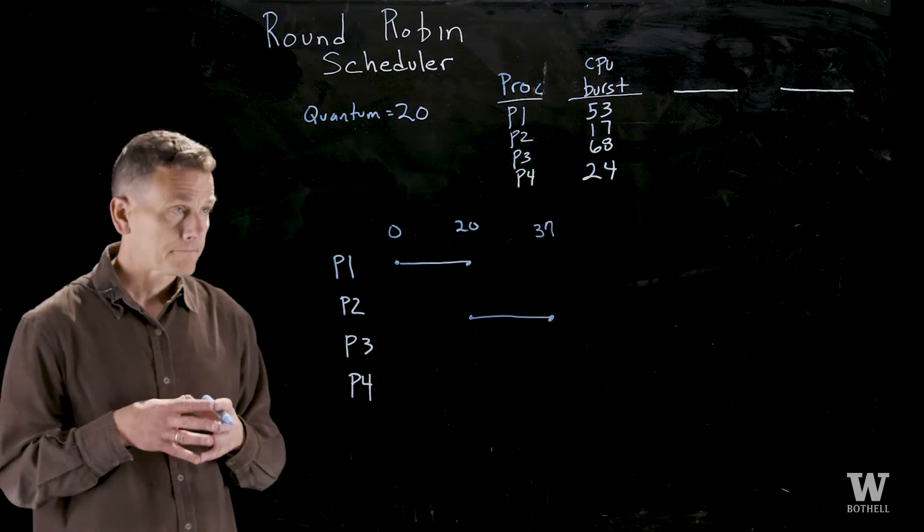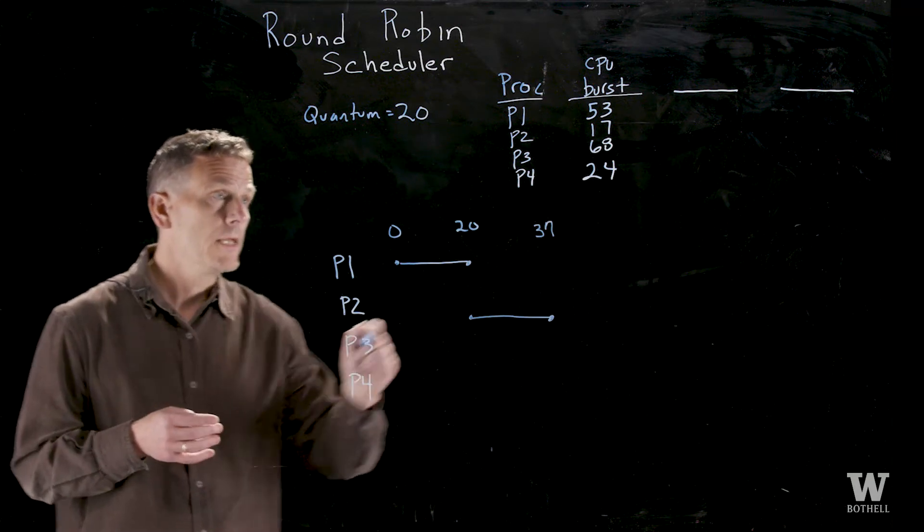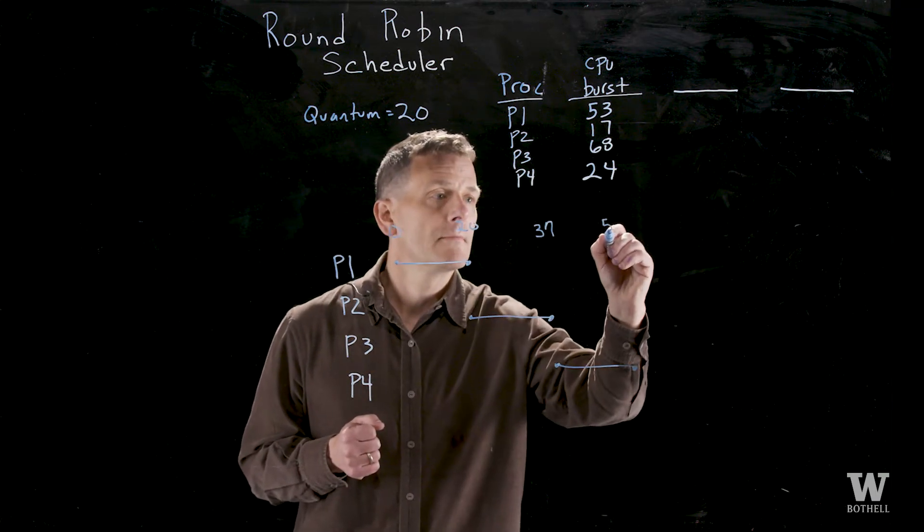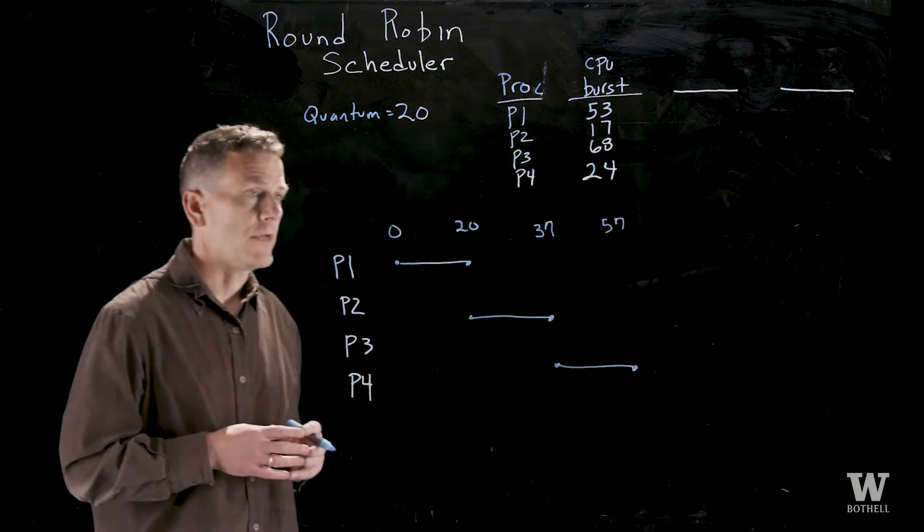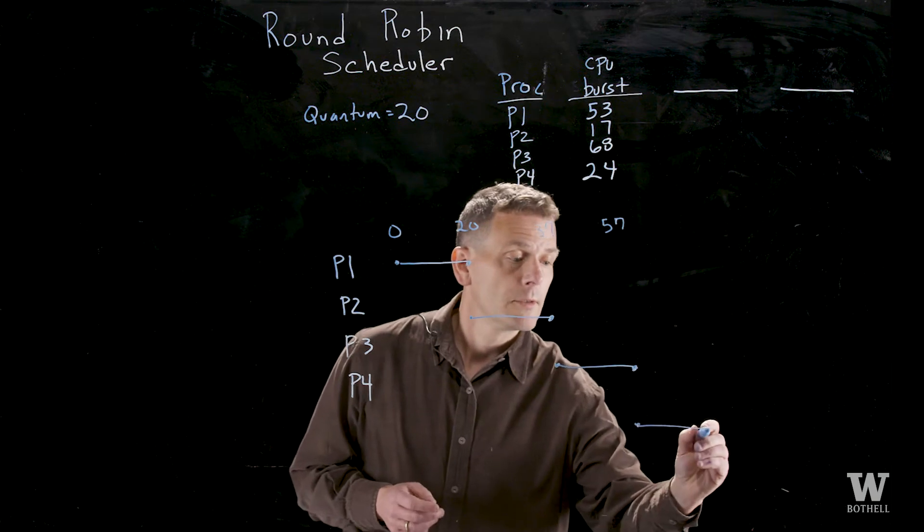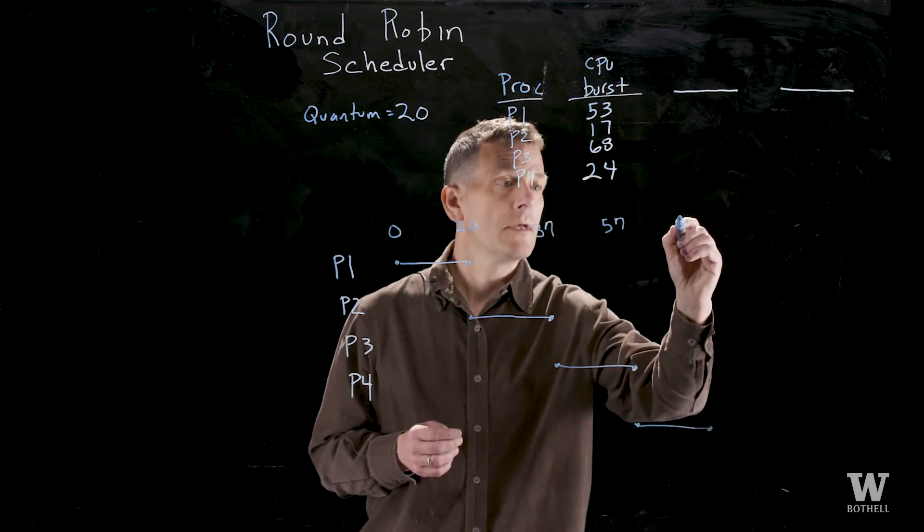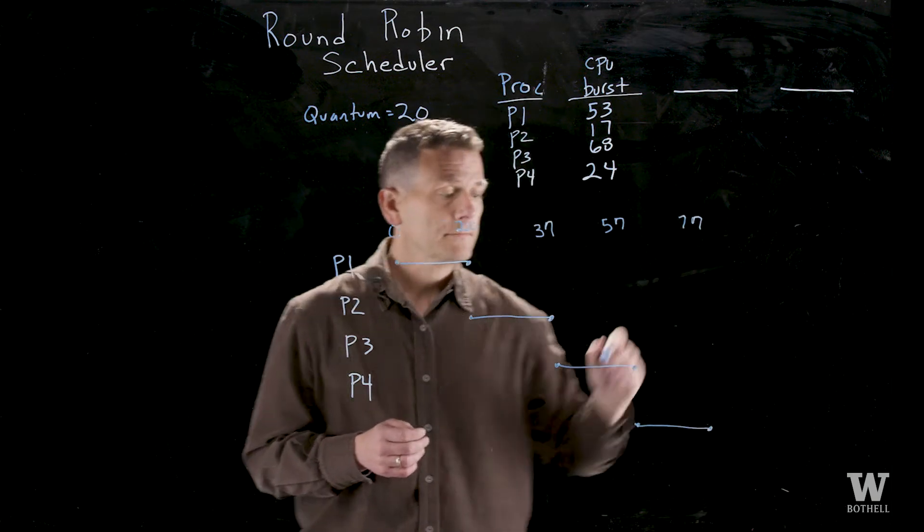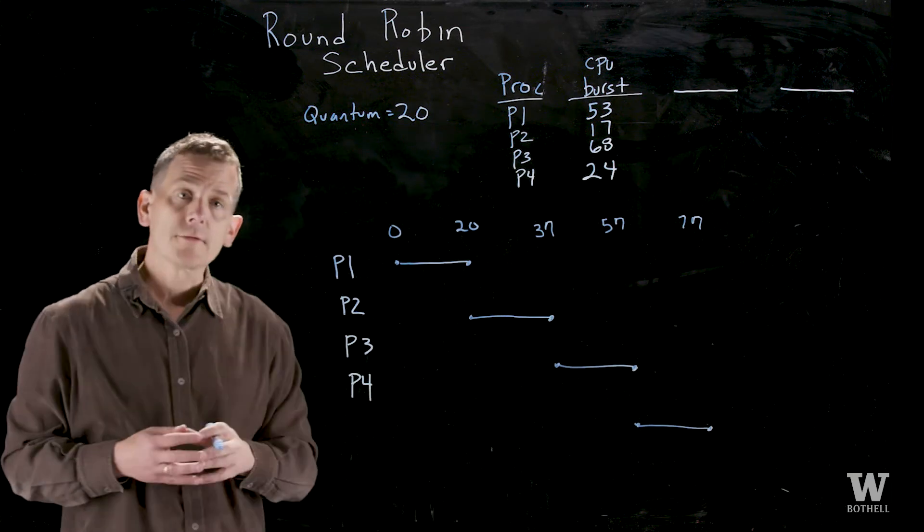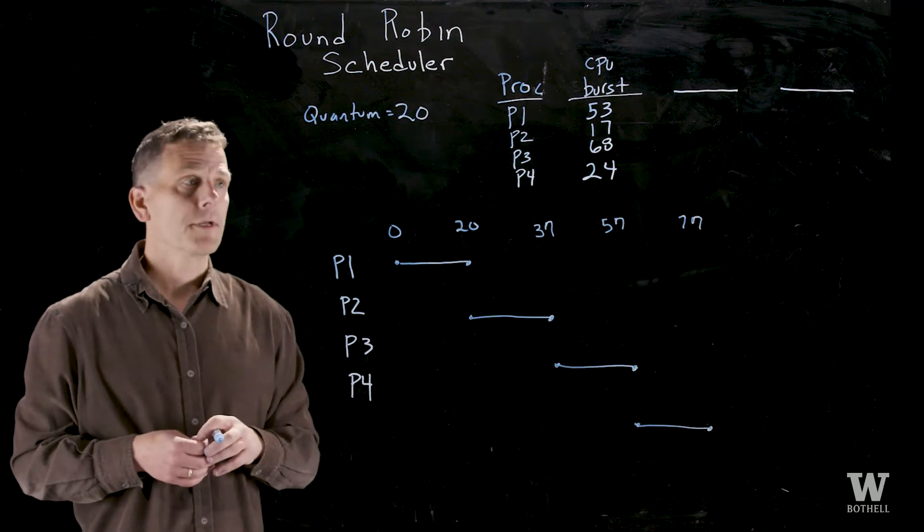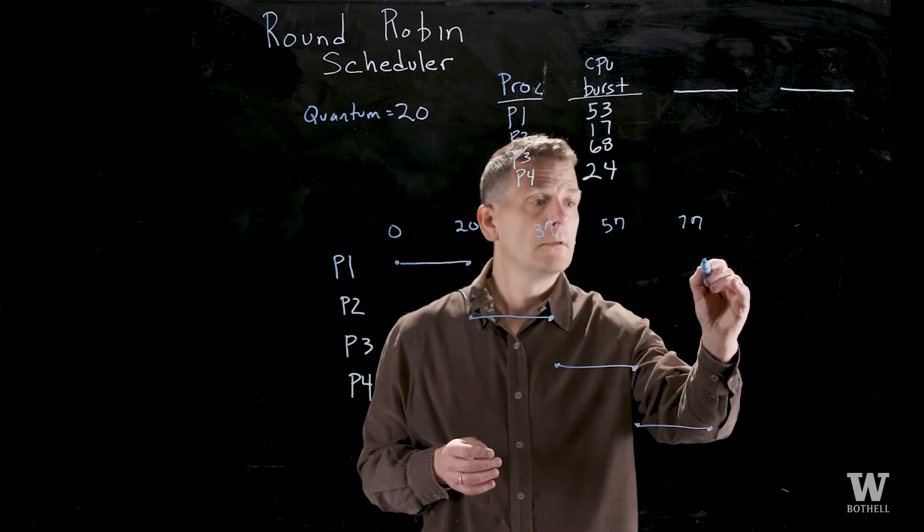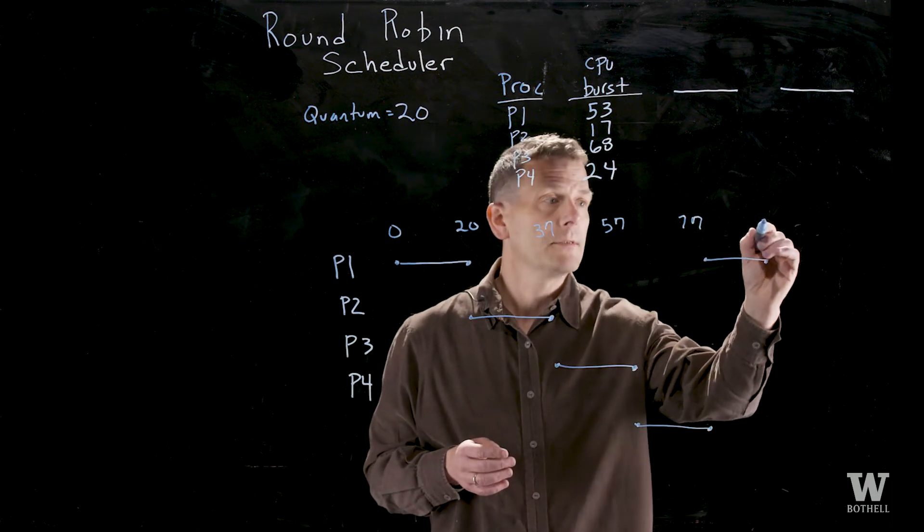Now process 3. Process 3 will run next and it requires 68 so it'll use the full 20 millisecond quantum taking us to 57. Process 4 will then run, it will use 20 milliseconds taking us to 77. Now we loop back around and we look to see who's next. Well there's nobody after process 4 so process 1 gets to run again.